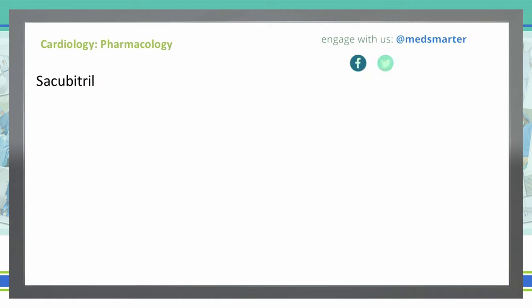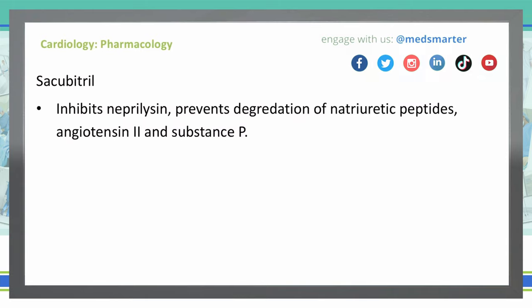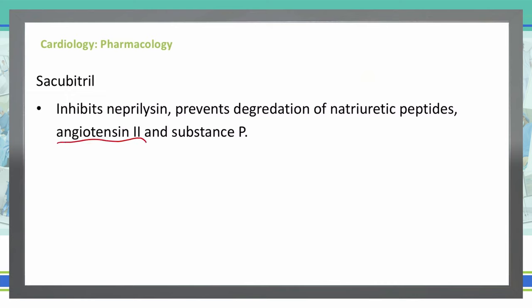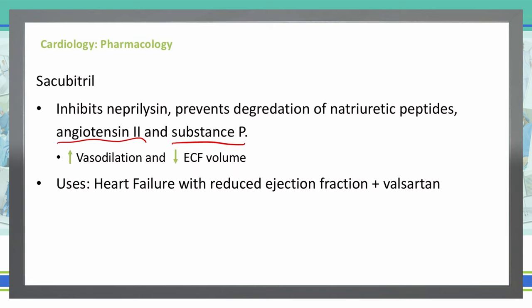Sacubitril is a medication that inhibits neprilysin, which prevents the degradation of natriuretic peptides. The natriuretic peptides it inhibits specifically are angiotensin 2 and substance P. By inhibiting these, we see an increase in vasodilation and a decrease in extracellular fluid volume. We can use this when patients have heart failure with a reduced ejection fraction.